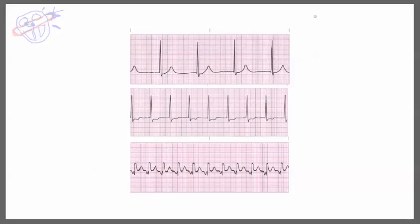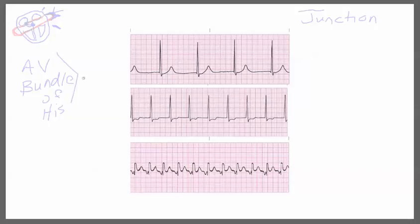When we look at junctional rhythms and we name them, we're going to name them based on the intrinsic rate and how it interacts. The intrinsic rate of the AV node and the bundle of His — their normal rate should be 40 to 60 beats per minute. So when we name our junctional rhythms, it's going to be with this in mind.